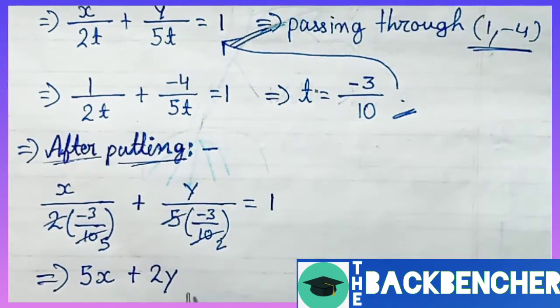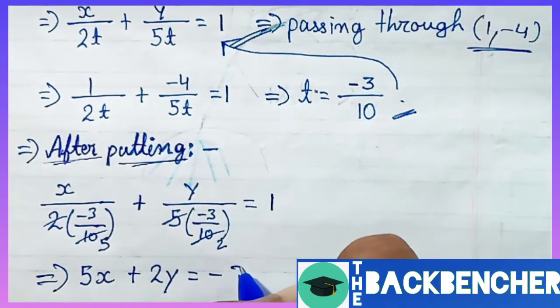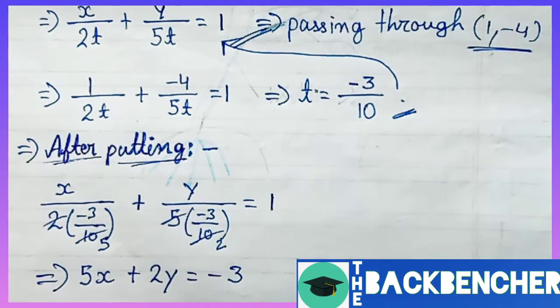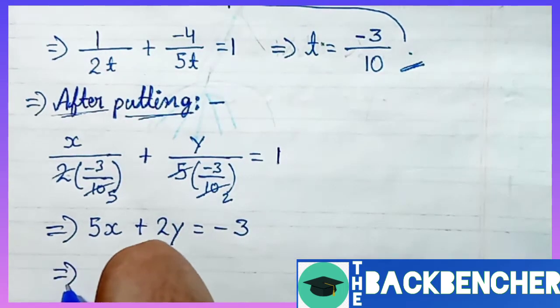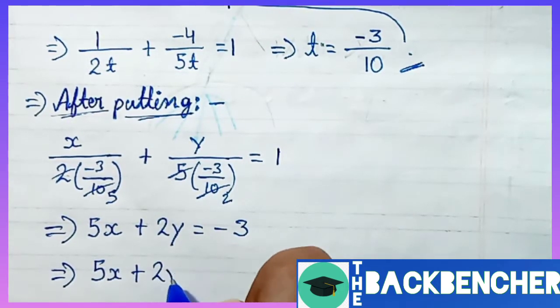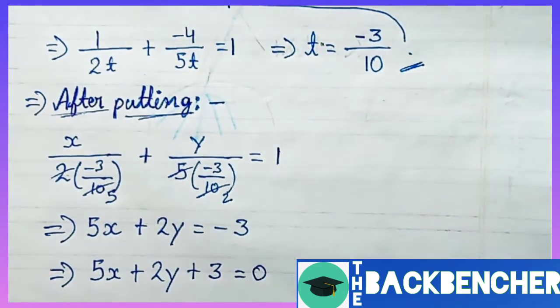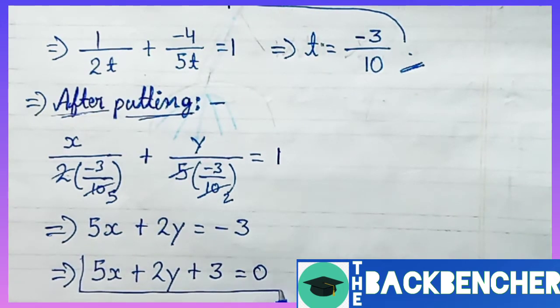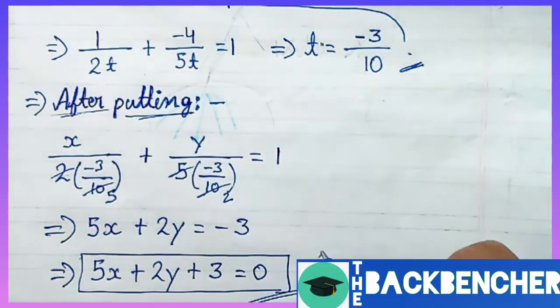After simplifying x/(2(-3/10)) + y/(5(-3/10)) = 1, we will get 5x + 2y = -3. I am writing it directly here. So the simplified form is 5x + 2y = -3. If we bring -3 to the left hand side, minus will change to plus. Finally we have gotten the equation of line: 5x + 2y + 3 = 0. That's our answer. I hope you have understood it. Thank you.